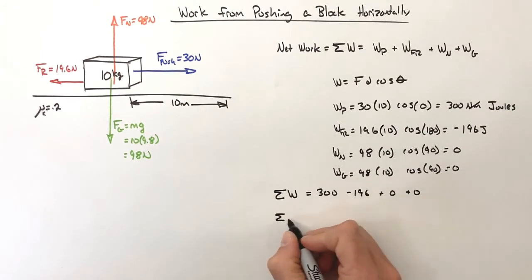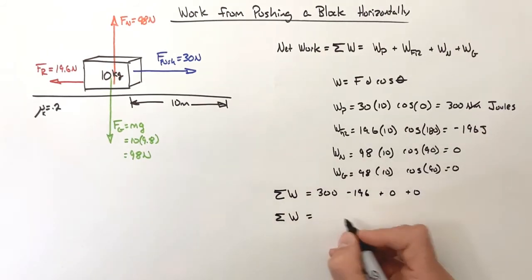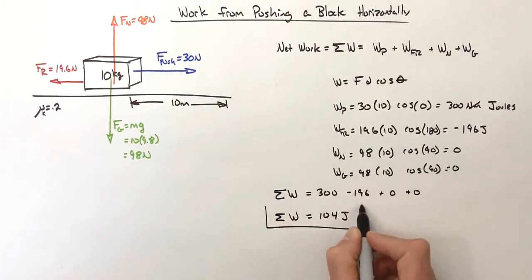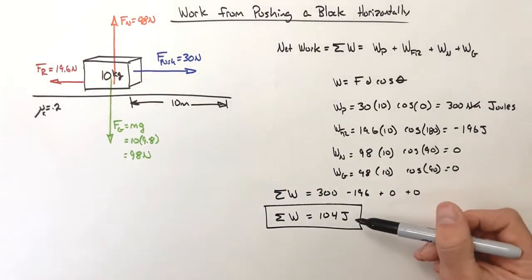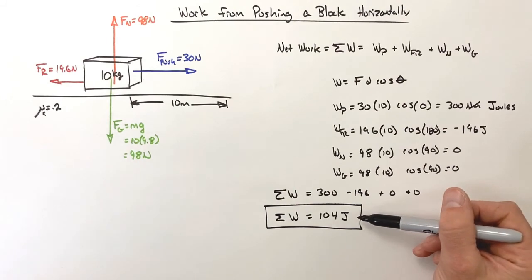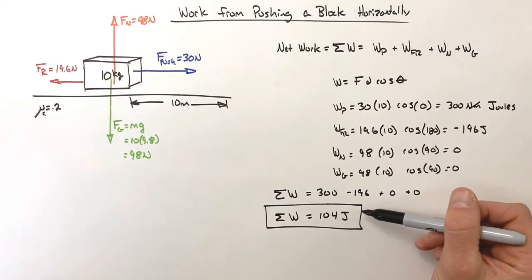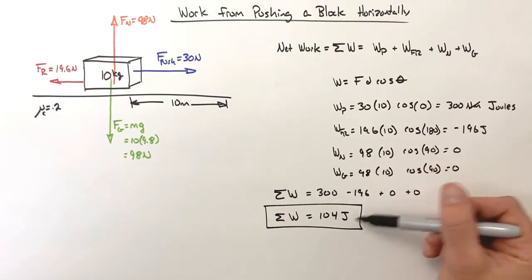This leaves us with a total work, or a sum of all works, or net work—whatever you want to call it—of 104 joules. Now what good is this? We'll get to that once we start talking about kinetic and potential energy in the work-energy theorem. I'll show you exactly what we can do with this.